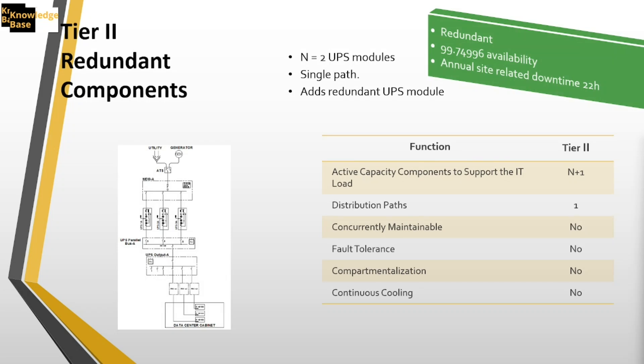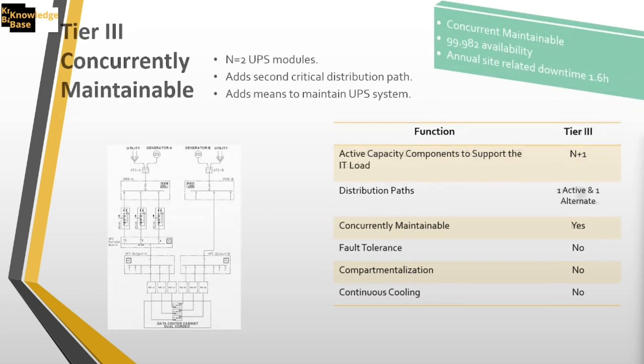Keep in mind that redundancy should be similar across all three main components of a data center to maintain the tier level. In tier 3, a concurrently maintainable data center, it's not only about redundancy in capacity — we also need a diversified path. We have redundancy in the power system on one end and a diversified path from another source on the other end, so there is no single point of failure all the way up to the rack. There are separate utility sources, two different generators, all coming through different automatic transfer switches to the rack.